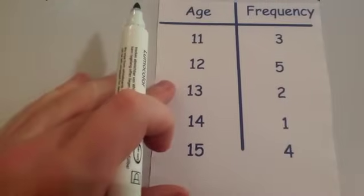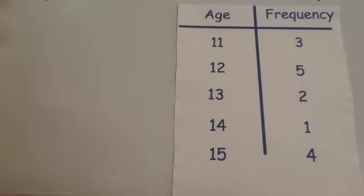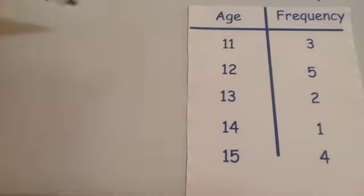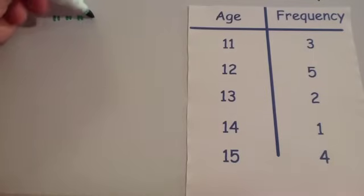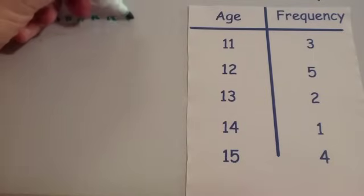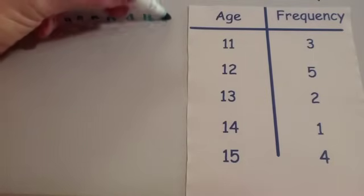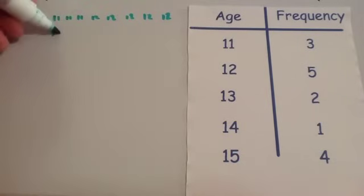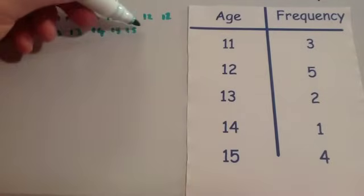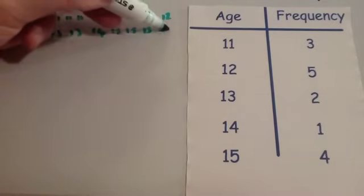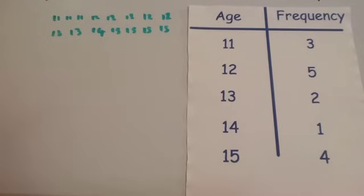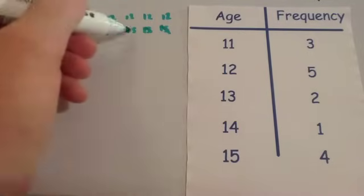To find the median, you could write them out on a list. You could write down 3 11 year olds, so 11, 11, 11. 5 12 year olds, so 12, 12, 12, 12, 12. 2 13 year olds, 1 14 year old, and 4 15 year olds. And then find the middle one. Remember you just cross off smallest, cross off the biggest and so on, until you find the median value.